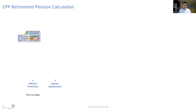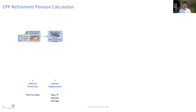The second step is to apply any special adjustments that you're entitled to, known as dropouts. Dropouts remove low earnings from your personal earnings history, which can increase your overall average. There are dropouts that everyone gets, called the general dropout. There are also child raising dropouts for caregivers who experienced low or no earnings due to child-raising duties. And you can also drop out the period of time where you received a CPP disability benefit.